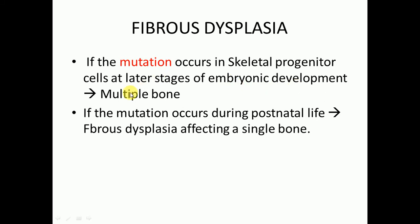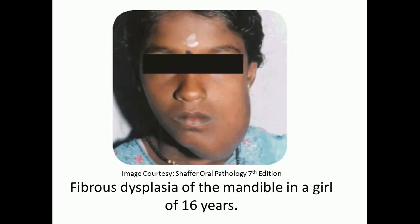If the mutation occurs during postnatal life, it will lead to single bone fibrous dysplasia, also known as monostotic fibrous dysplasia. Here is an image of fibrous dysplasia of the mandible in a girl of 16 years — you can see the growth over this area.